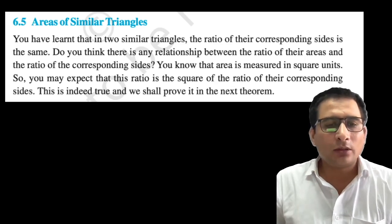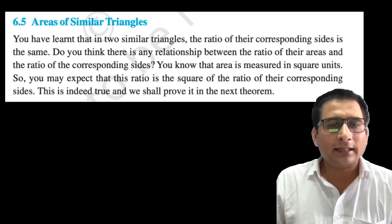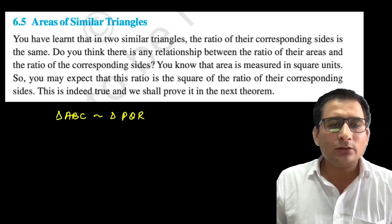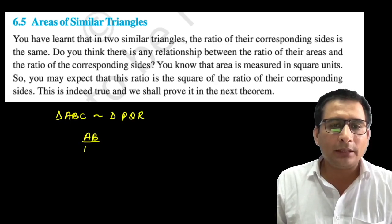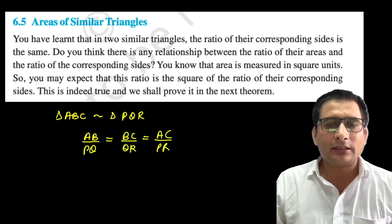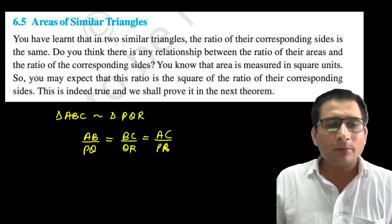We have seen that if two triangles are similar — suppose triangle ABC is similar to triangle PQR — toh unki sides ka ratio hai: AB upon PQ, BC upon QR, and AC upon PR. If the triangles are similar, then their sides ratio is the same. This thing we have seen.